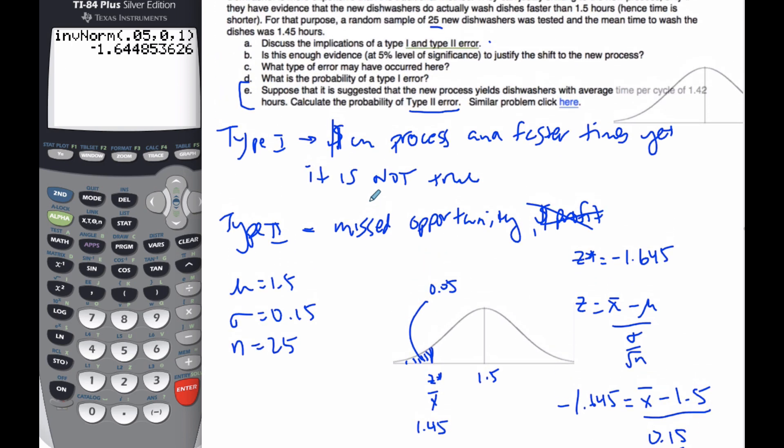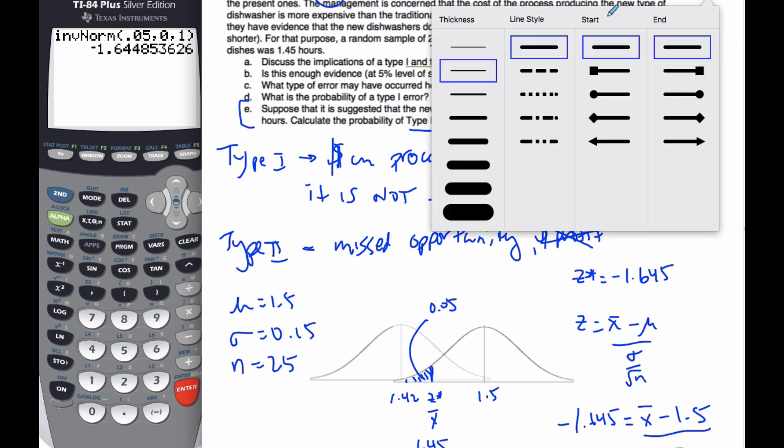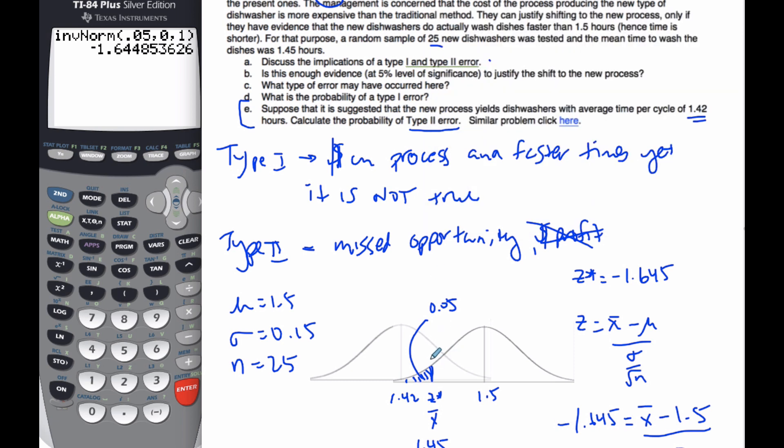But to do a type 2 error, that means that this value is actually incorrect. And that there must be a value for the mean that is actually true. So the actual true value of the normal curve should look like this. And I'm going to, someone believes that it's 1.42 hours. And so this value here is 1.42. Is this mean here. And so the mean here, well, if I want to find out the probability of a type 2 error, well, I'm going to switch colors here. That's going to happen if it lands in this region here of the graph.